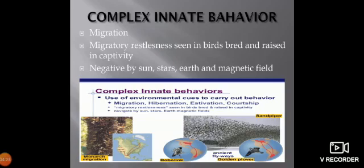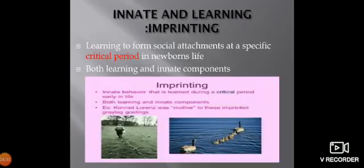Migratory restlessness is seen in birds bred and raised in captivity, and navigation is guided by the sun, stars, Earth, and magnetic field. Imprinting is an attachment of a young newborn toward living or non-living objects, forming social attachments at specific critical periods in the newborn's life. It has both learning and innate components — it is innate behavior that is learned during a critical period early in life.